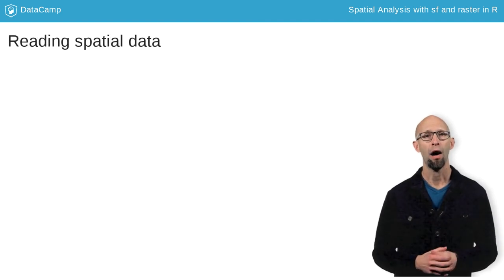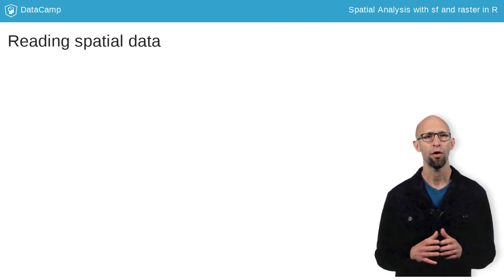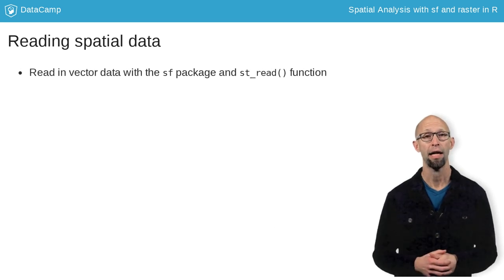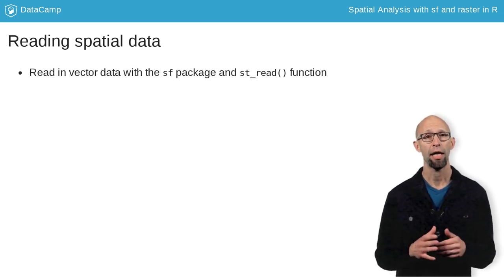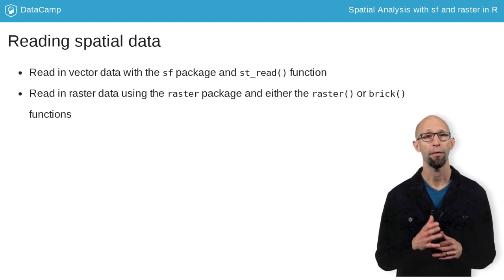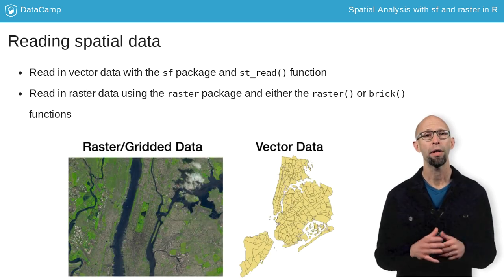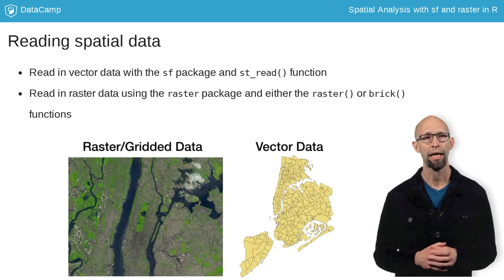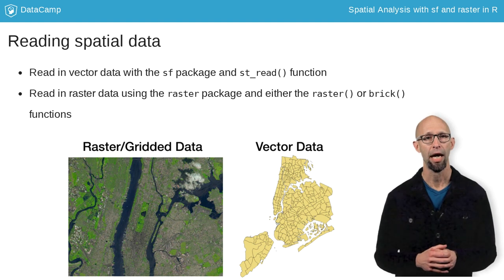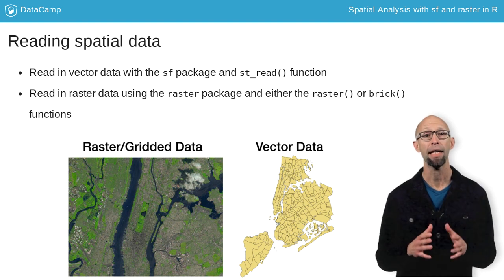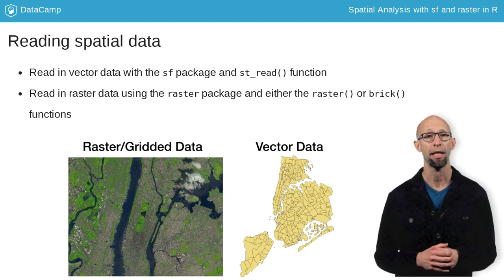For reading data into R, I'm going to introduce you to three functions. For vector data, all you need is st_read. For raster data, we'll talk about the raster and brick functions. All three of these functions are flexible in the sense that they can read in a wide range of different data types and they guess the input based on the input data suffix.